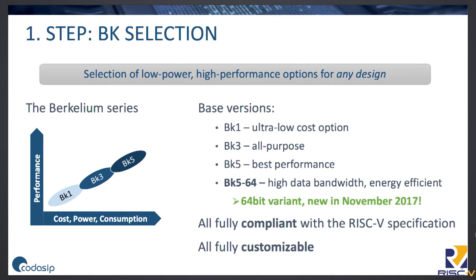In our CodaSIP portfolio we have different versions of the Berkelium core. Berkelium 1 is an ultra low cost option, really a simple core. Then BK3 contains three pipeline stages and is suitable for a variety of applications. BK5 offers the best performance, and in November we introduced a new 64-bit variant of the Berkelium 5, suitable for storage and wireless applications.